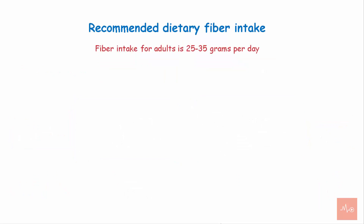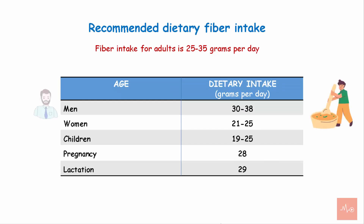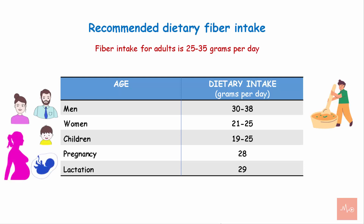The recommended fiber intake for adults is 25 to 35 grams per day. Men require about 30 to 38 grams per day, while women require about 21 to 25 grams per day. Children require about 19 to 25 grams per day. The requirement during pregnancy is about 28 grams per day, and during lactation it is about 29 grams per day.